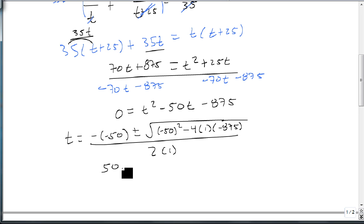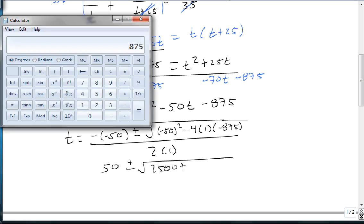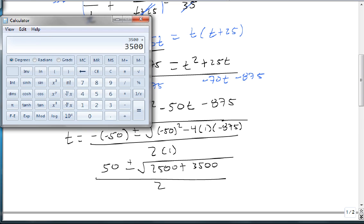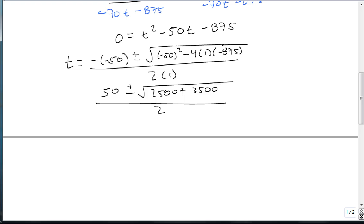Well, minus minus 50 is easy, that's just 50. And 50 squared is easy, that's 2500. Minus times a minus is a plus, and 4 times 875 is 3500, all over 2. Well, 3500 plus 2500 is 6000.